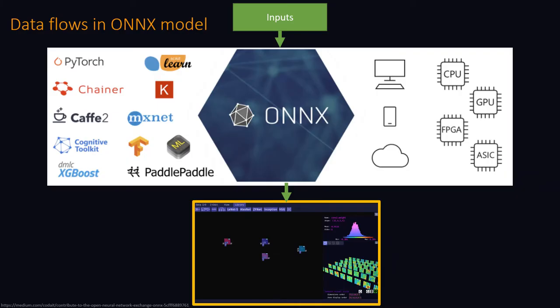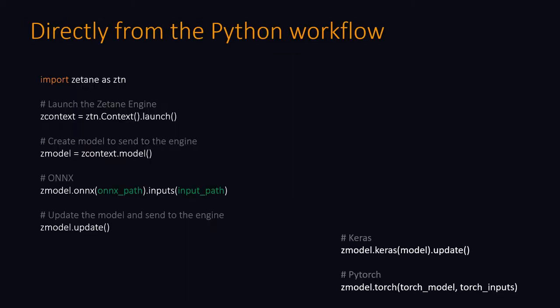To address issues related to the black box problem, we pass input data to the ONIX models and then project the models in our Zetane engine, where we can explore every component of the model. We can inspect the architecture of the computation graph, but also all the tensors contained in each operator node.